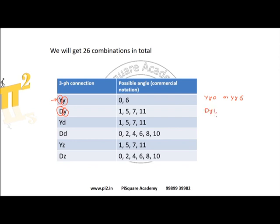DY1 — DY1 means the high voltage winding is at 12 o'clock, and the low voltage winding is at position 1, which means the low voltage winding is lagging the high voltage by 30 degrees. Now we will see how to identify this number, which is very crucial. Be more attentive now.